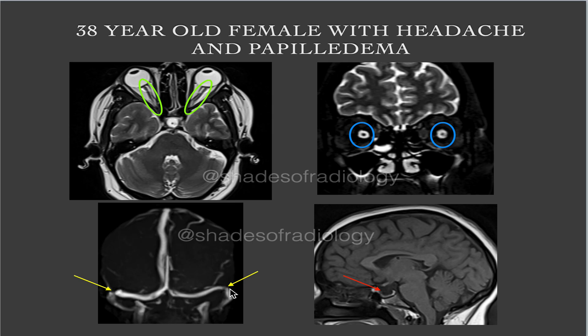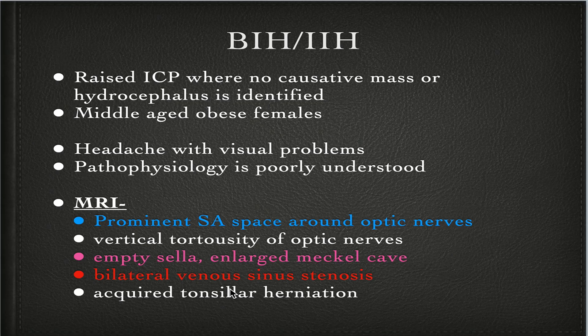Let us see a few clinical features of benign intracranial hypertension. When do we call it benign intracranial hypertension or idiopathic intracranial hypertension? It is raised ICP where there is no positive mass or hydrocephalus, and it is more commonly seen in middle-aged obese females. The most common complaint is severe headache with visual complaints. The pathophysiology is still an enigma and poorly understood — various hypotheses have been postulated but none are conclusively proved.